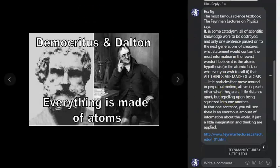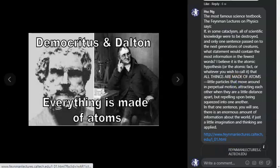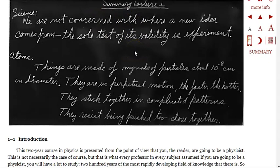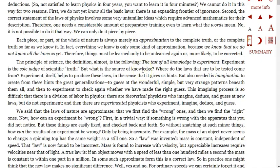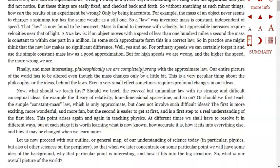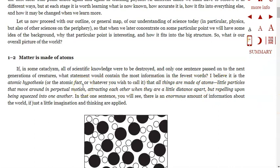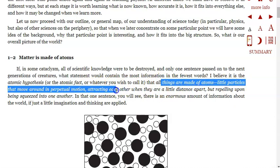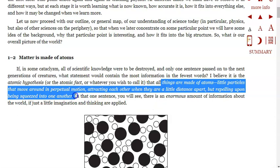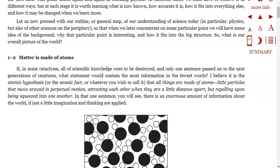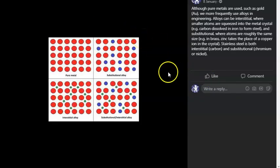The Feynman lectures — when we say that everything is made of atoms, that's pretty much the first line of Richard Feynman's lectures on physics, probably the most famous physics textbooks. He says that if all knowledge were to be lost, the concept conveying the most information in the fewest words is that all things are made of atoms — little particles that move around in perpetual motion, attracting each other when a little distance apart, but repelling each other when squeezed into one another.